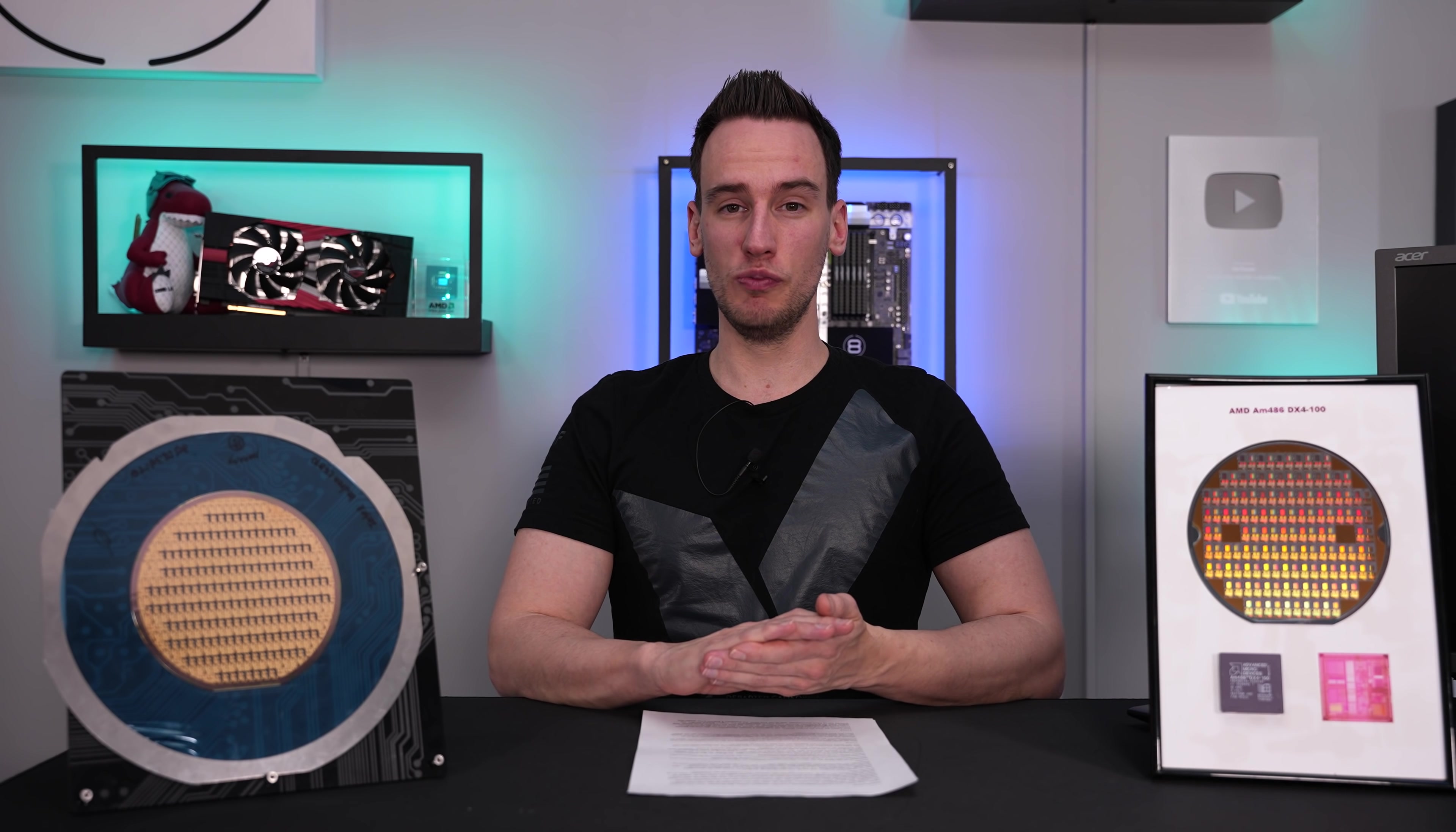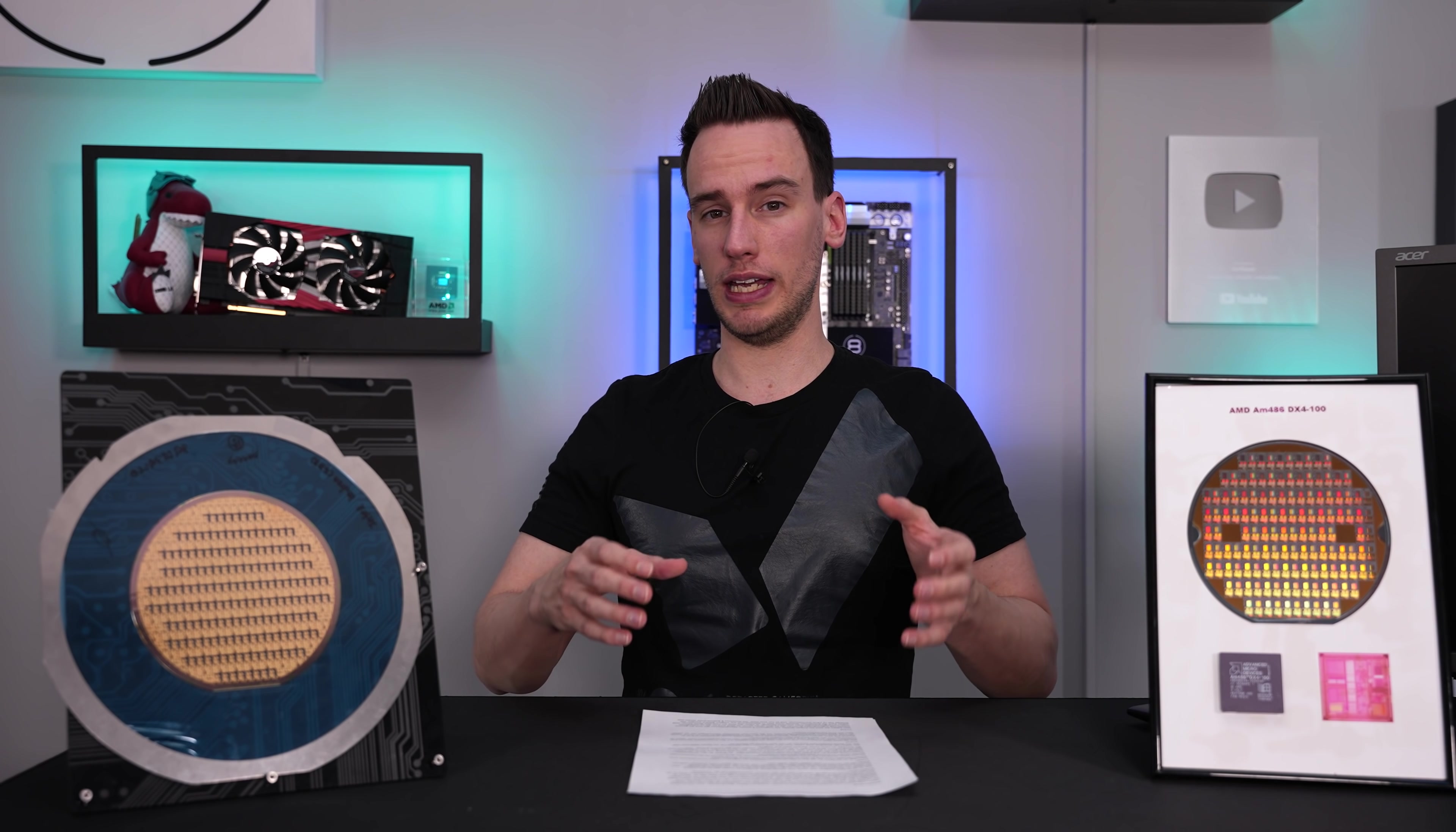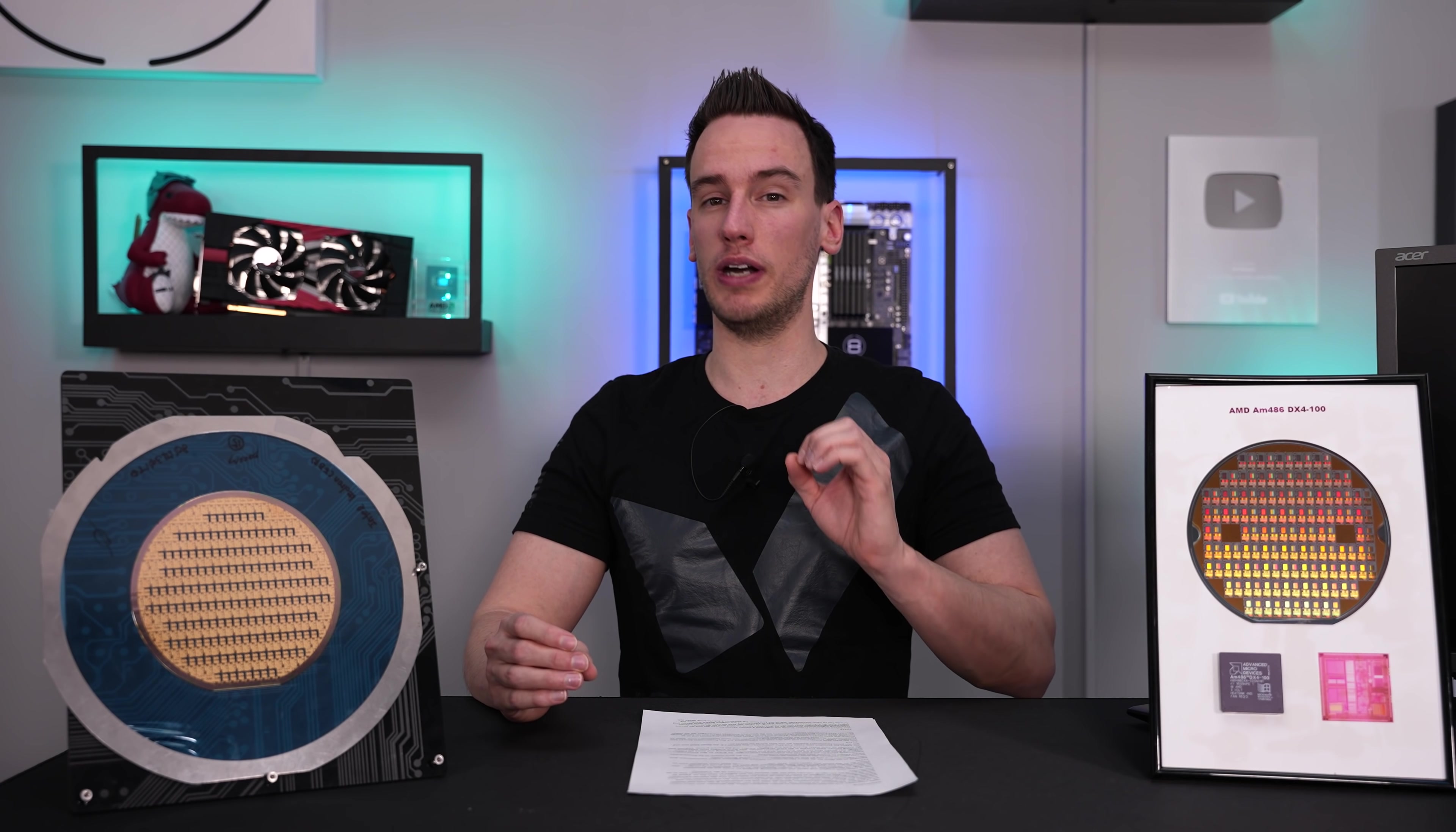Hi and welcome back to a new video. As you might know, the current TSMC 7nm process, which is also used in the AMD Ryzen 5000 CPUs, has a transistor density of about 100 million transistors per square millimeter.